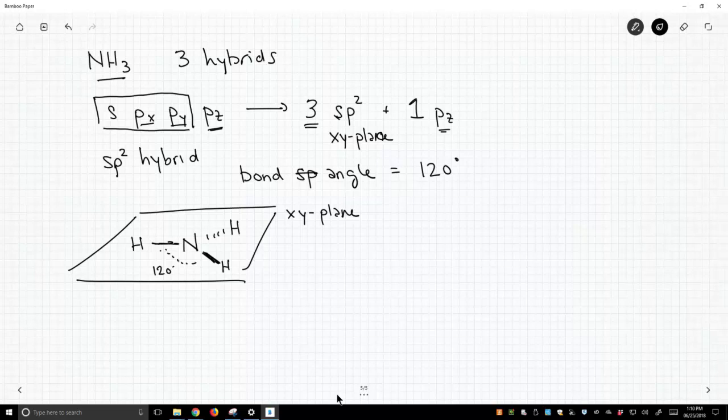How about the lone pair? Well, the lone pair is left over. We didn't count the lone pair when we wanted to see how many hybrids we get. So this orbital holds the lone pair.